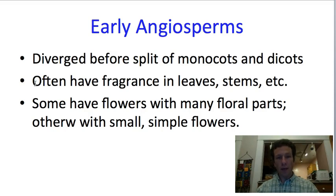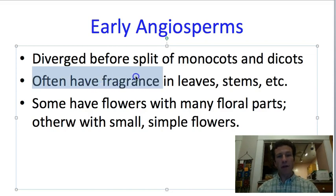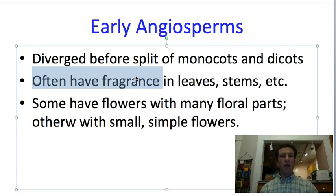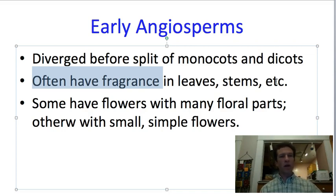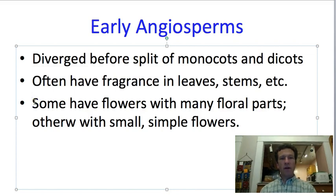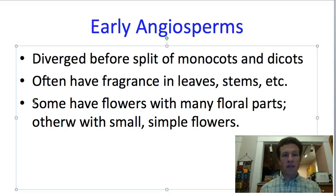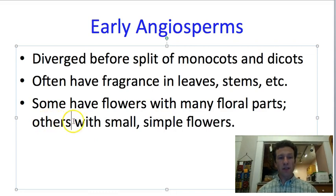One characteristic in common is that most basal angiosperms have fragrance — not just in the flowers, which is common across angiosperms, but also in the leaves, stems, and other flower parts. So if you scratch or crush a leaf or stem, there's often a strong odor associated with it. The flowers are variable. We used to say that early angiosperms generally had many flower parts, and we'll see examples that fit that pattern. However, there are other species that have small, simple flowers, so it's oversimplified to say they all have large flowers with many parts.